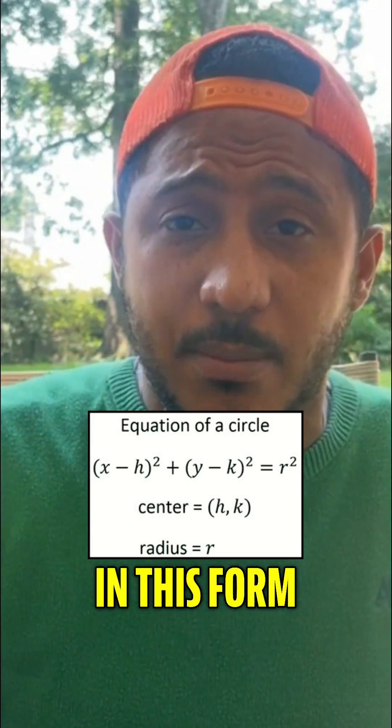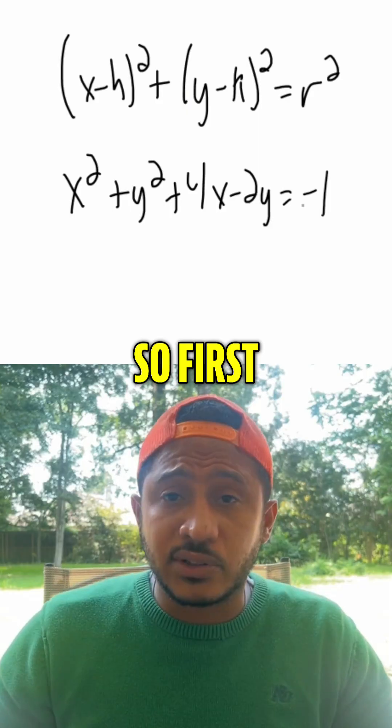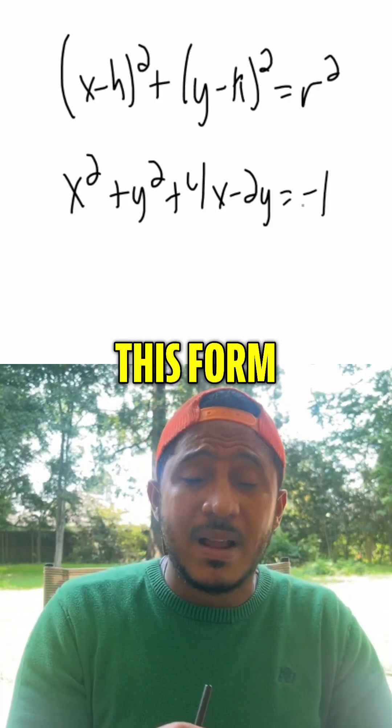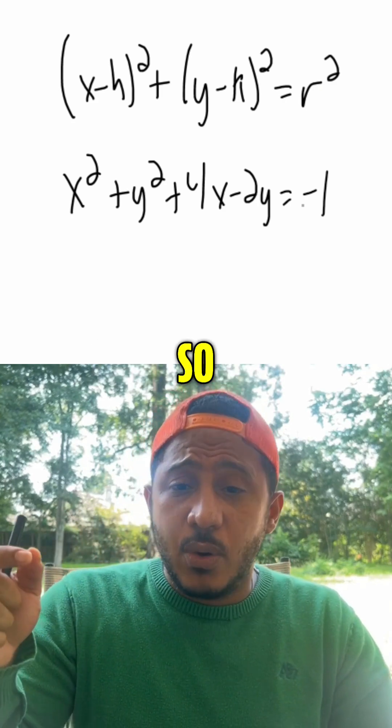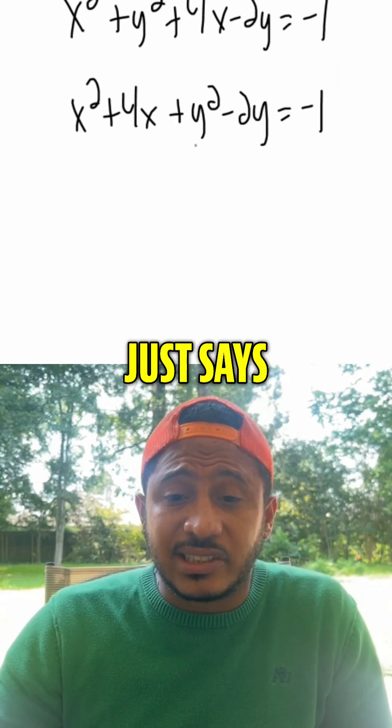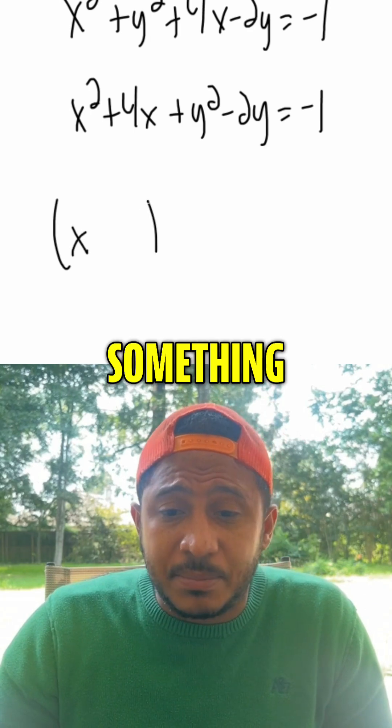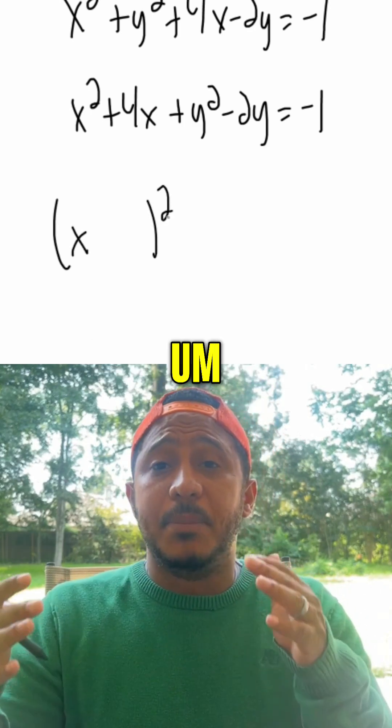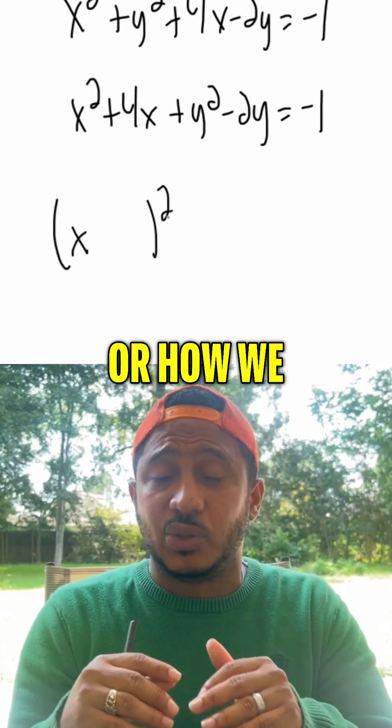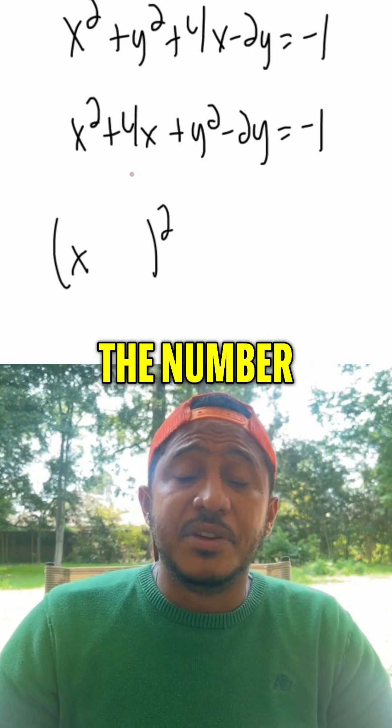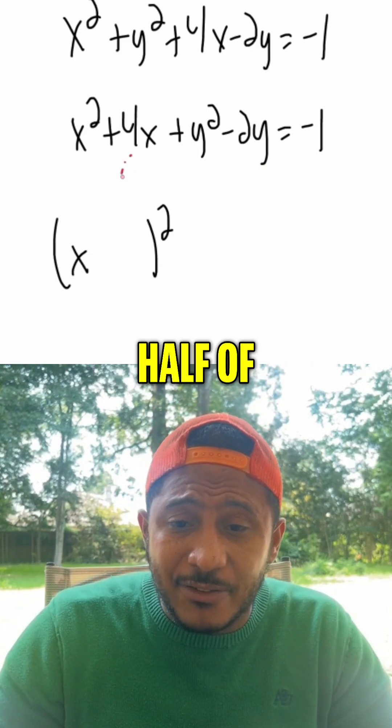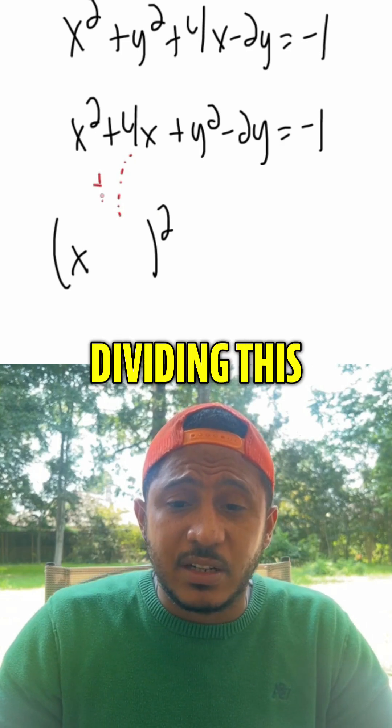So to put it in this form, we need to complete the square because it's not quite in this form. So first, to complete the square, to get it in this form, we first need to gather the x stuff and gather the y stuff. So completing the square just says, well, I need x something squared. Now how we organize these square things or how we write this as a binomial squared is by first noting that the number inside of the parentheses is always half of this number. So we're dividing this by 2.